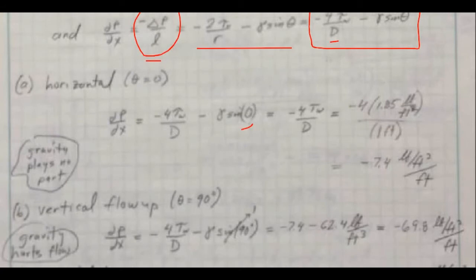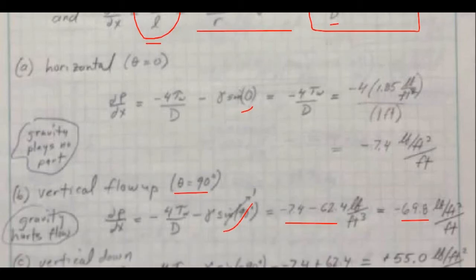Now, if we have vertical flow upward, then that means that our theta is equal to 90 degrees. That means that sine of 90 degrees is equal to 1. So this term sticks around, and we actually get an appreciable effect here, where we get quite a bigger pressure drop, which means it's harder to push the water uphill, or up the pipe, right? So that makes a lot of sense. It should be very different to move the water horizontally versus upward vertically.